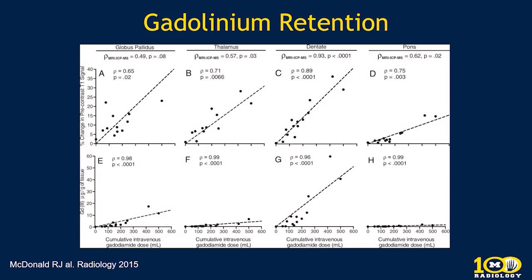Data from that study focusing on the dentate nucleus showed that percent change in signal intensity on T1-weighted images and actual gadolinium in tissue both correlated strongly with cumulative gadodiamide administered — the more exposures to gadodiamide, the more signal intensity in the brain and the more gadolinium in tissue.